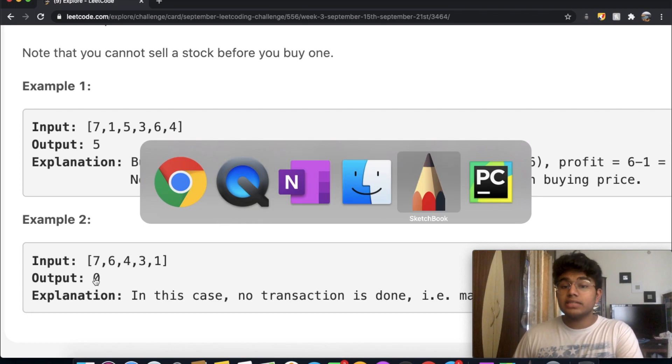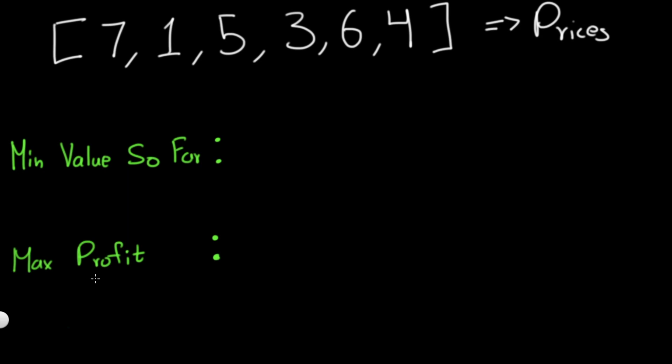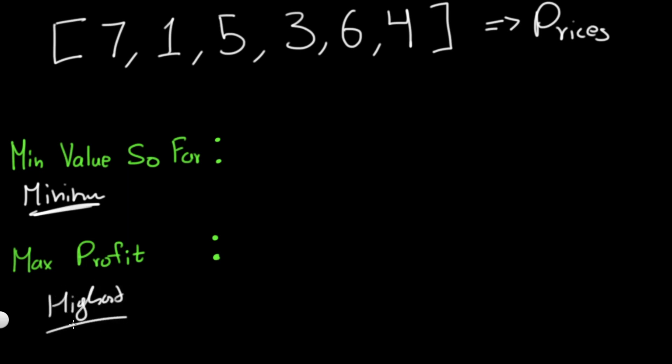Let's go through this step by step with the example 7, 1, 5, 3, 6, 4. We're going to have two variables: a variable called minimum value so far, and a max profit variable. You want to preferably buy when the price is cheapest — so we're looking for the minimum price possible. And for max profit, we want the highest profit possible, which happens when the sell price is much higher than the buy price.